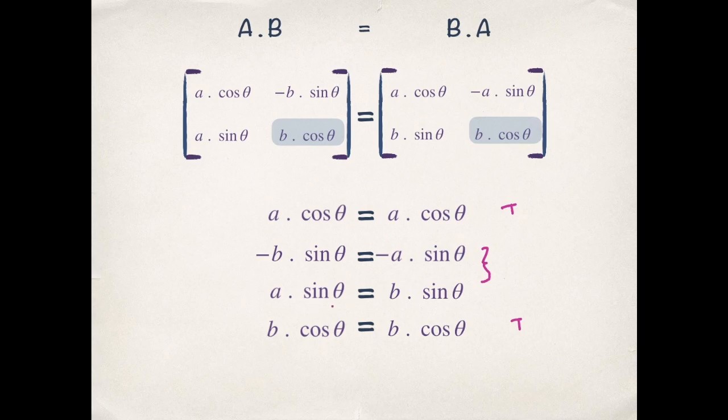Now basically we need to solve only one equation a sin θ equals to b sin θ in order to satisfy A product B equals B product A. That is the commutative property.